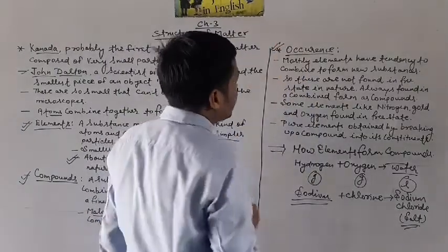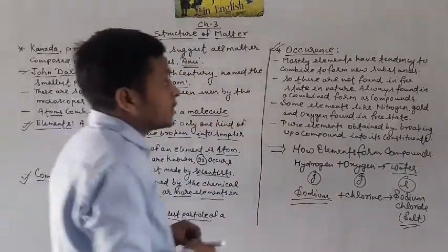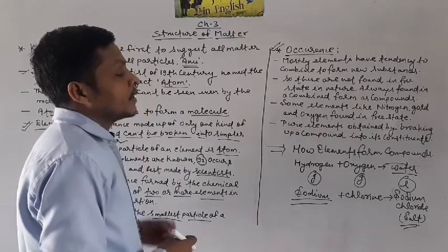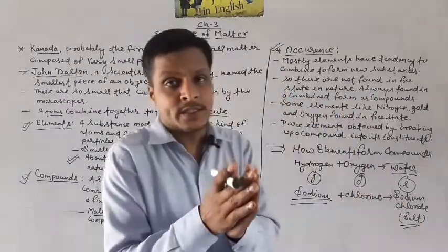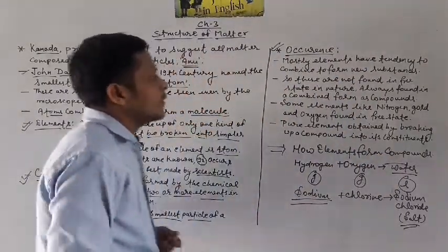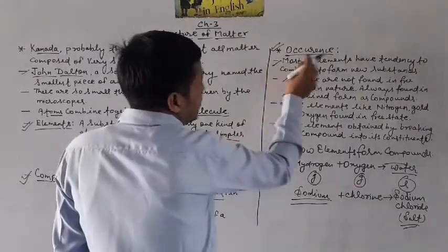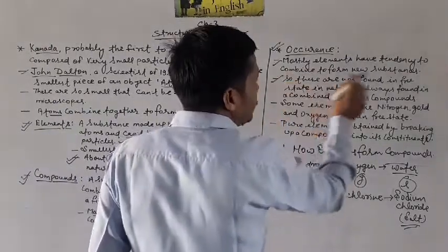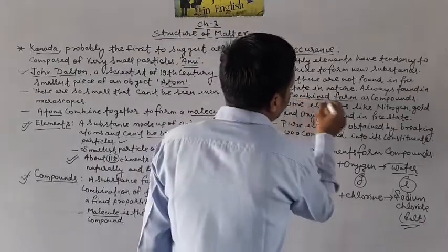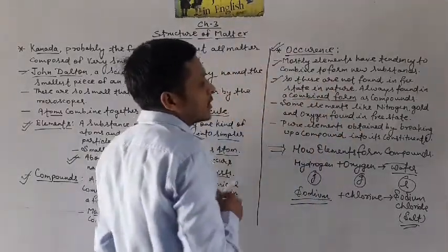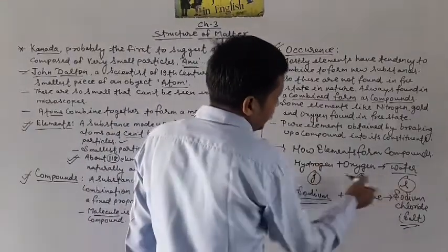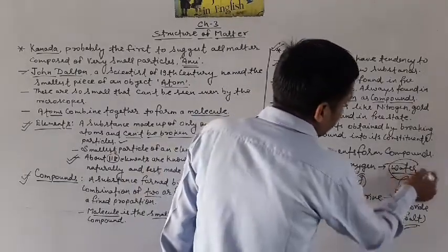Let's come to the next point, that is occurrence — yeh paai kaise jaati hain? Jo mostly elements hote hain, inke andar ek tendency hoti hai to combine together. Ek doosre ke saath combine karne ki, to combine karne ke baad they form a new substance. Isi wajah se yeh free state mein nature mein nahi paye jaate — they are always found in a combined form, like compounds.